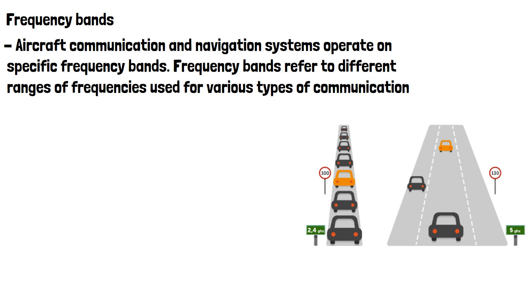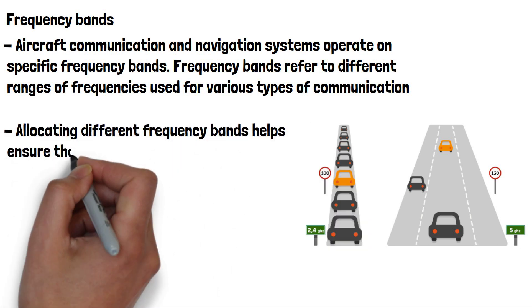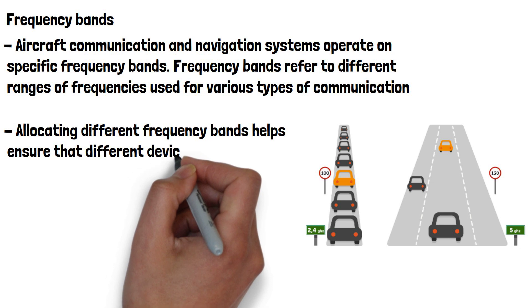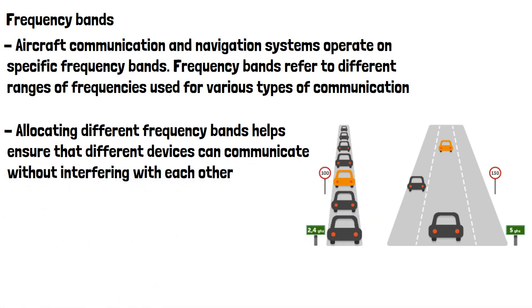For example, cellular networks use specific frequency bands for voice calls and data transmission, while Wi-Fi networks use different frequency bands for wireless internet connectivity. Allocating different frequency bands helps ensure that different devices can communicate without interfering with each other, much like vehicles on separate lanes of a motorway following different speed limits to stay safe and avoid accidents.